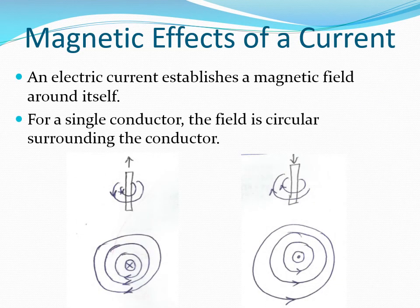Magnetic effects of a current. An electric current establishes a magnetic field around itself. This means that as long as there is current flowing in some material, there is going to be an associated magnetic field. For a single conductor, the field is circular in nature and it surrounds the conductor. The diagrams illustrate the shape of the field that is established around a single current-carrying conductor.